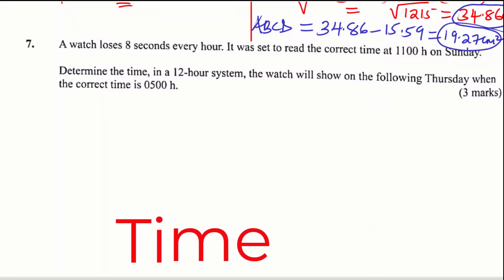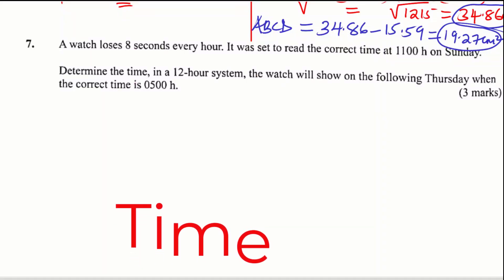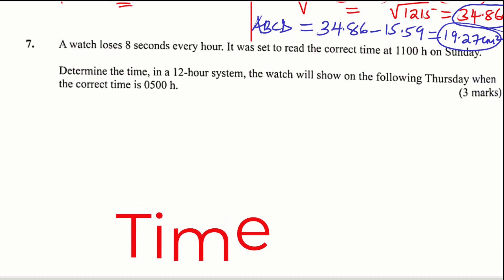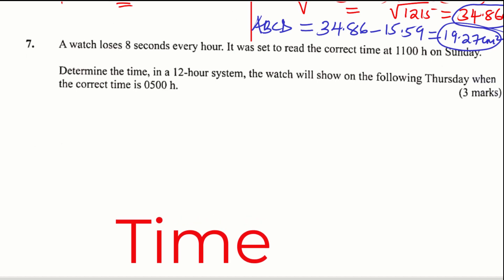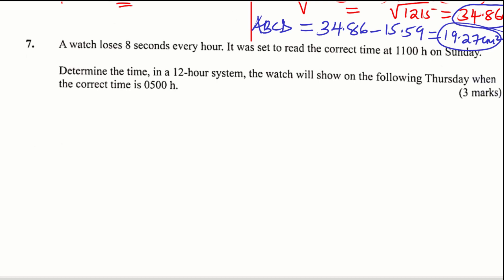Question number 7. A watch loses 8 seconds every hour. It was set to read the correct time at 11:00 hours on Sunday. Determine the time in the 12-hour clock system that the watch will show on the following Thursday when the correct time is 05:00 hours.